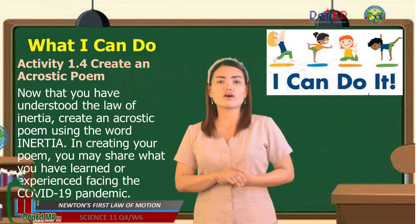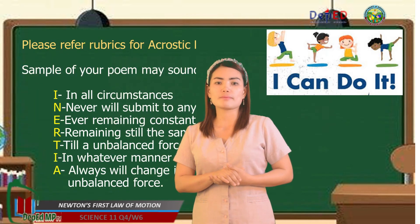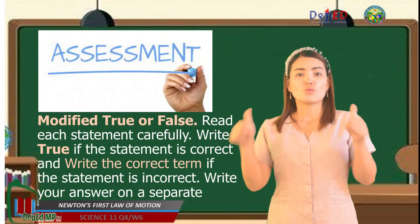Now that you have understood the law of inertia, create an acrostic poem using the word INERTIA. Creating a poem, you share what you have learned or experienced facing the COVID-19 pandemic. Sample of your poem may sound like this: I - in all circumstances, N - never will submit to any pressure, E - ever remaining constant and stable, R - remaining still the same, T - till an unbalanced force acts on it or happens, I - in whatever manner or pattern the force may come from, A - always will change it unless it has less inertia than an unbalanced force. Are you the same with this? Very good! Wow! Good job, you're doing it right.